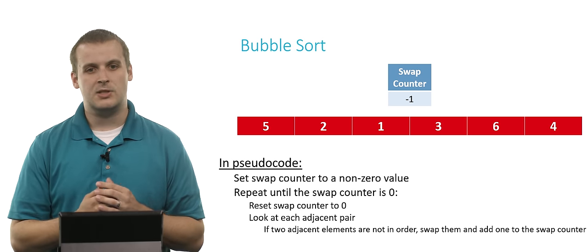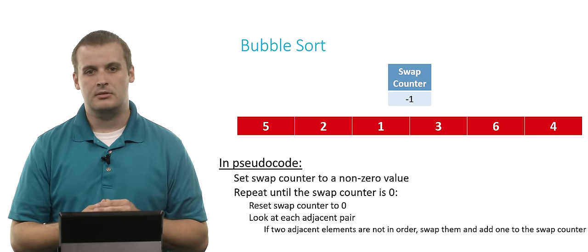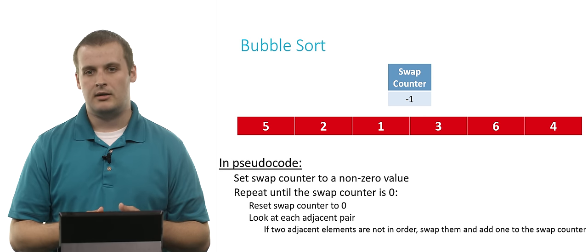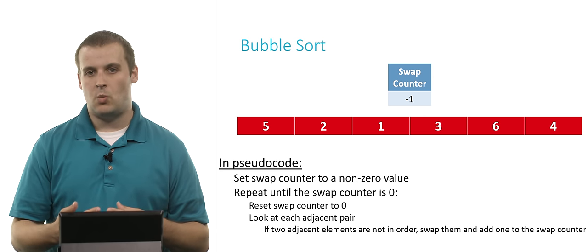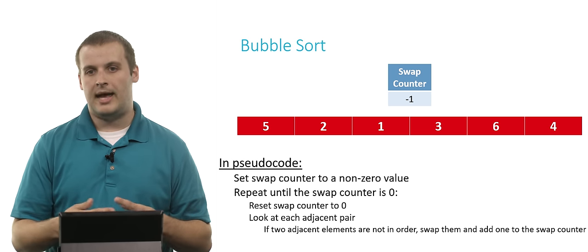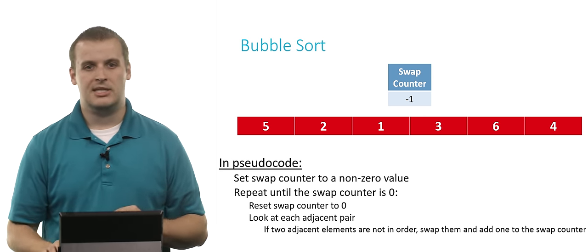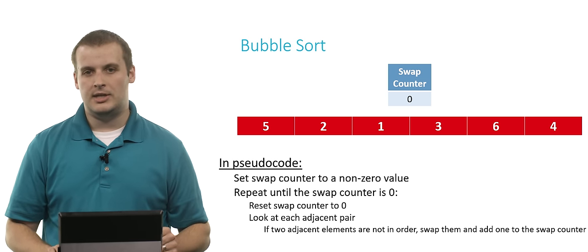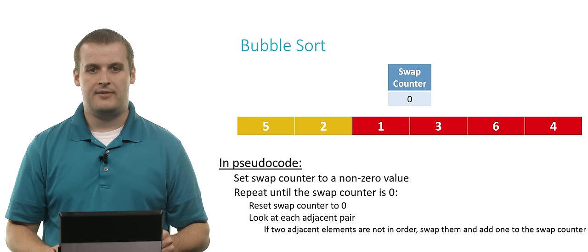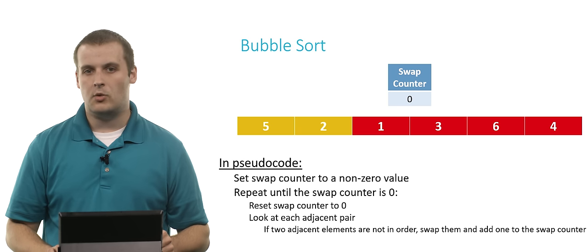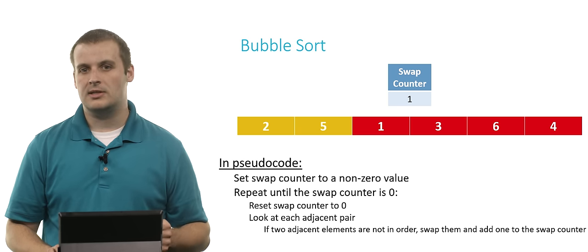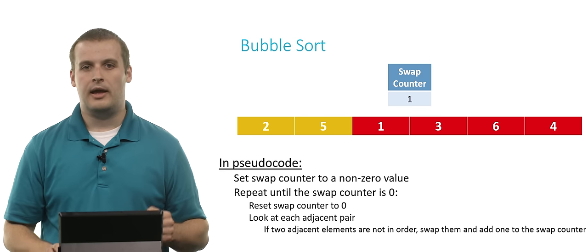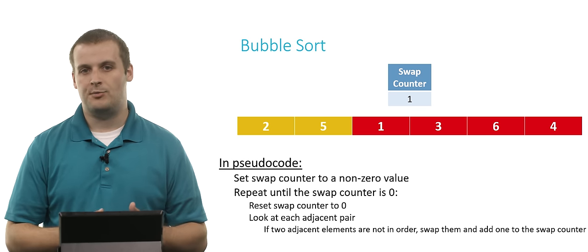So again, the steps are: reset the swap counter to zero, then look at every adjacent pair, and if they're out of order, swap them and add one to the swap counter. So we first start looking at five and two. We see that they are out of order, so we swap them and add one to the swap counter. Now our swap counter is one, and two and five have been switched.